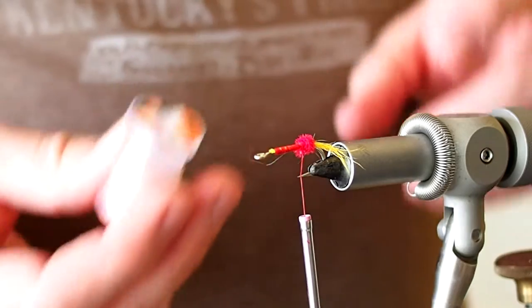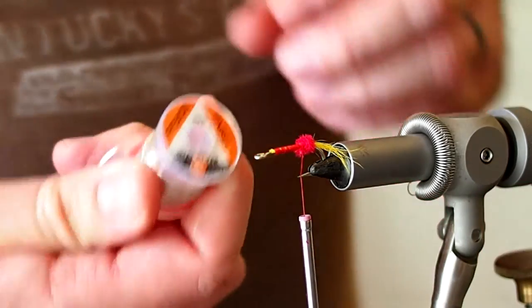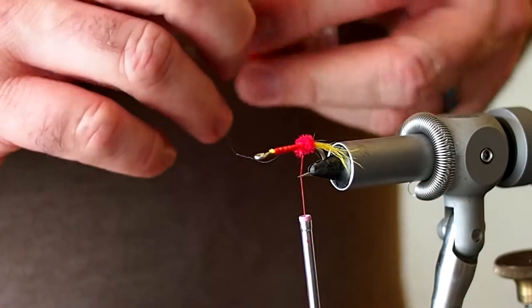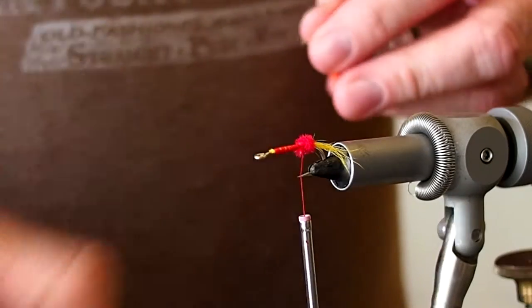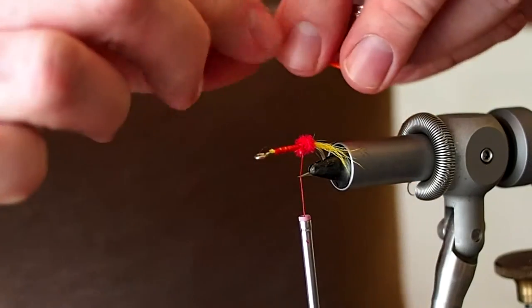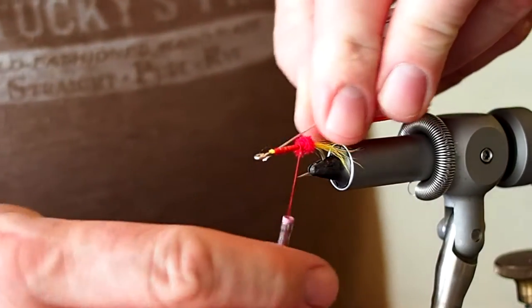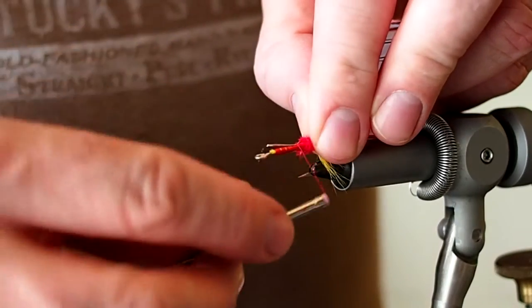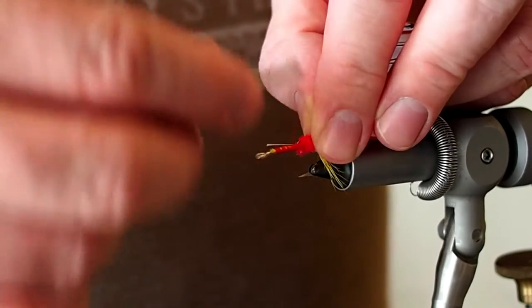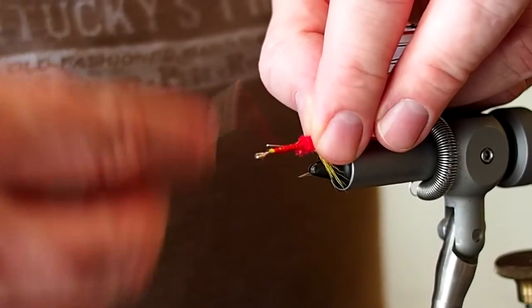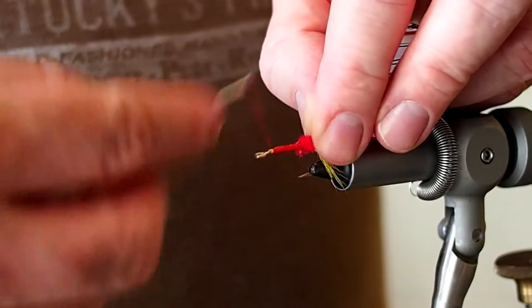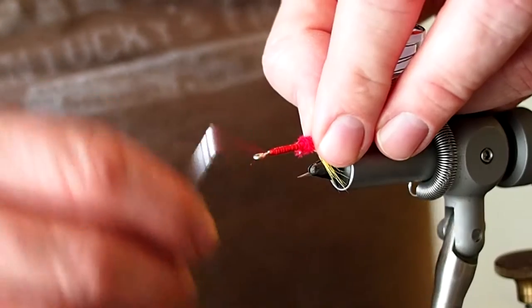For the body I'm going to be using some medium silver tinsel. I'm going to tie that in at the butt and just leave enough of a tag to come back to our tie in point, where we keep a consistent thickness of body.